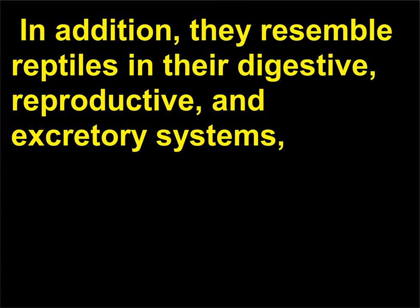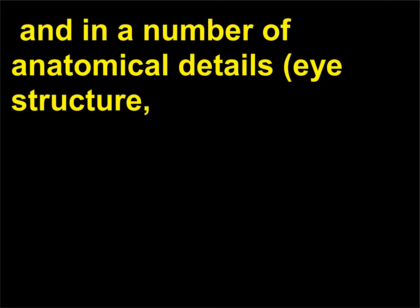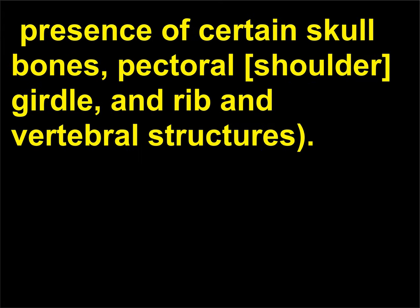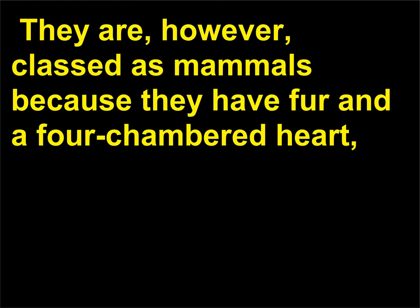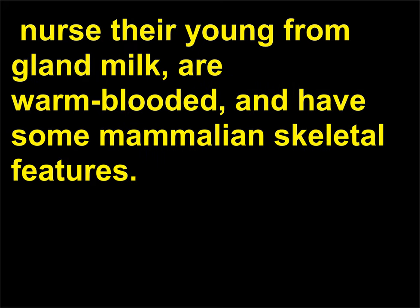In addition, they resemble reptiles in their digestive, reproductive, and excretory systems, and in a number of anatomical details including eye structure, presence of certain skull bones, pectoral shoulder girdle, and rib and vertebral structures. They are, however, classed as mammals because they have fur and a four-chambered heart, nurse their young from gland milk, are warm-blooded, and have some mammalian skeletal features.